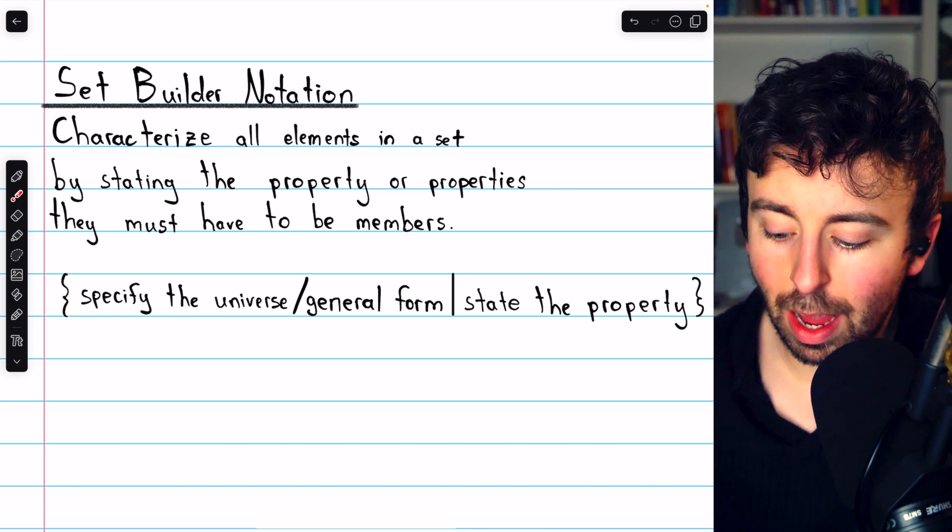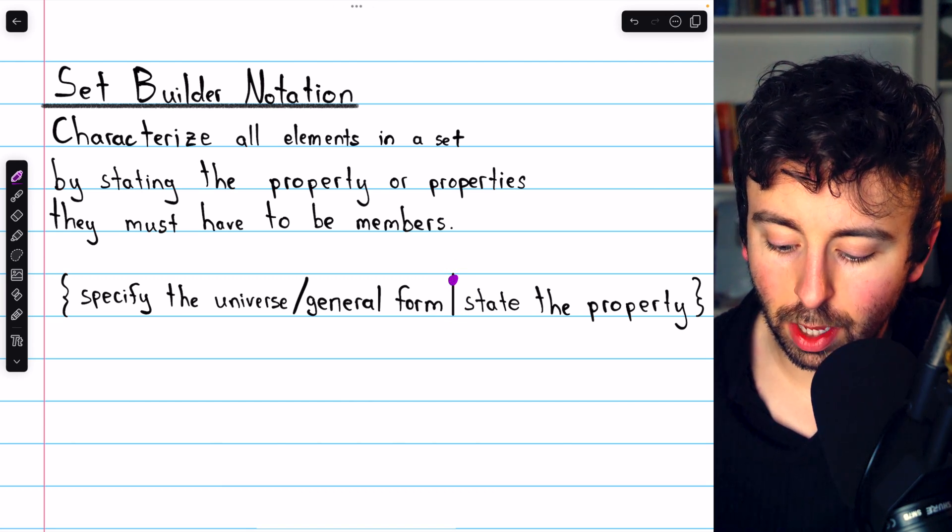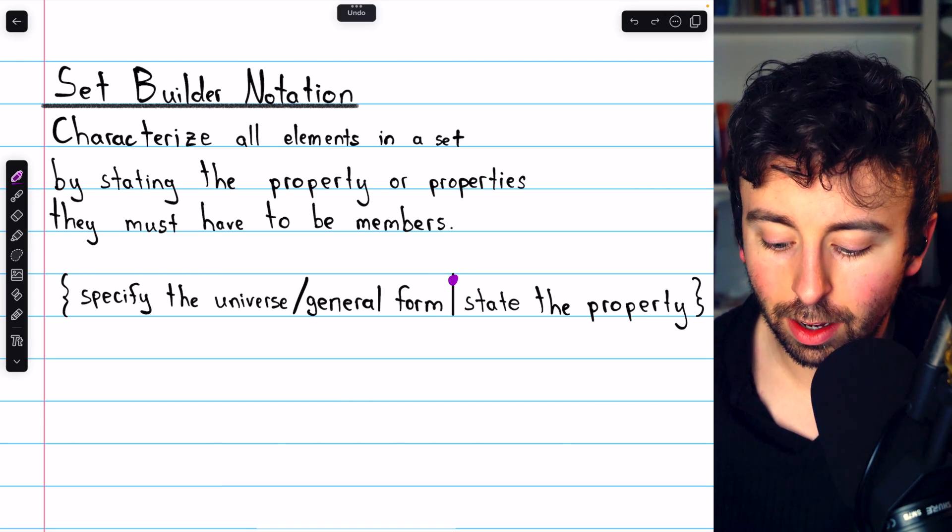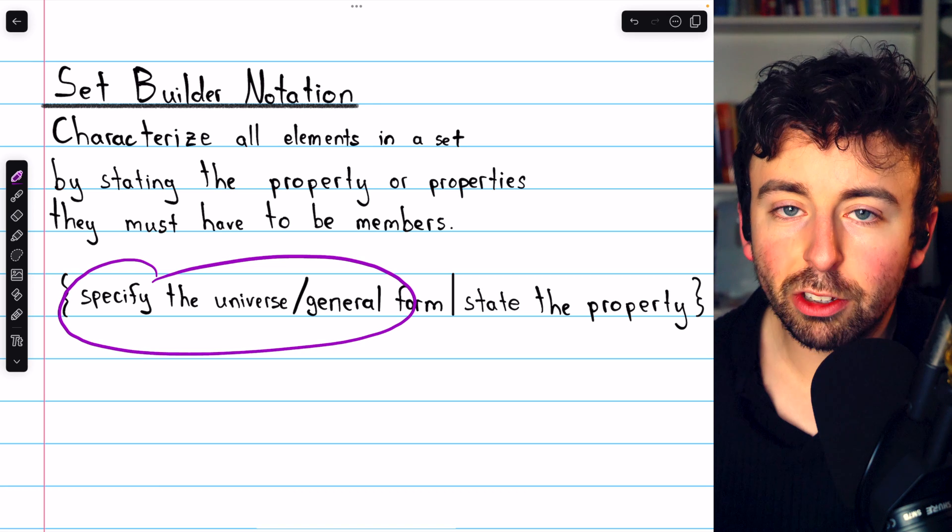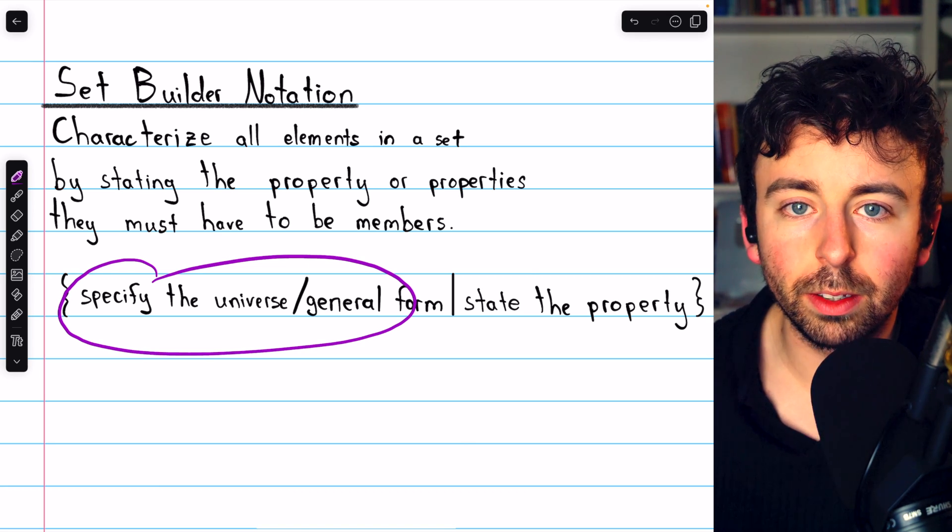So you use set brackets, and then there's a vertical line splitting it into two halves. Sometimes two dots are used instead. On the left, we generally specify the universe that elements in the set come from, like the naturals, or the reals, or the rationals.